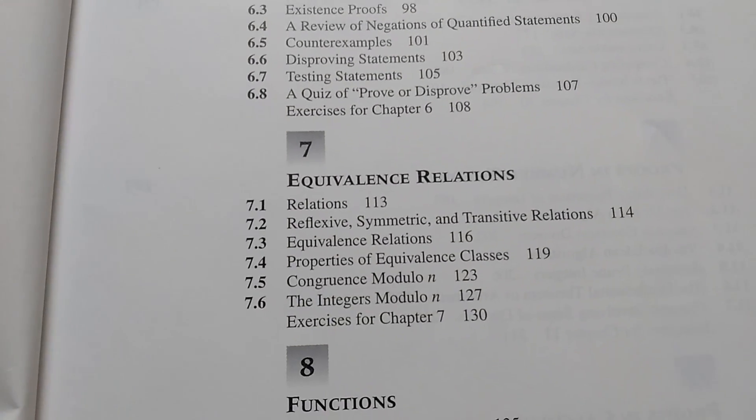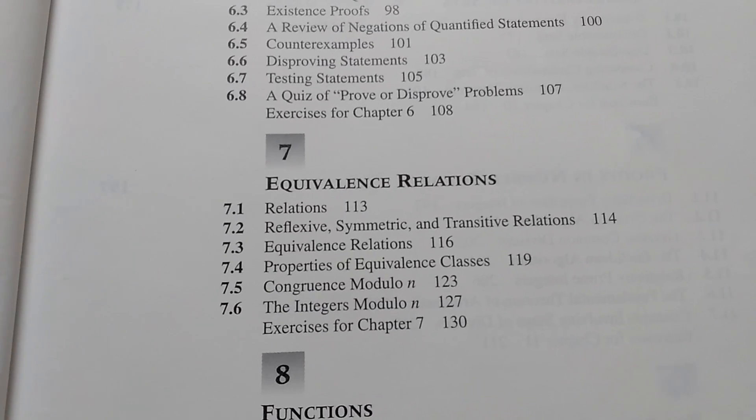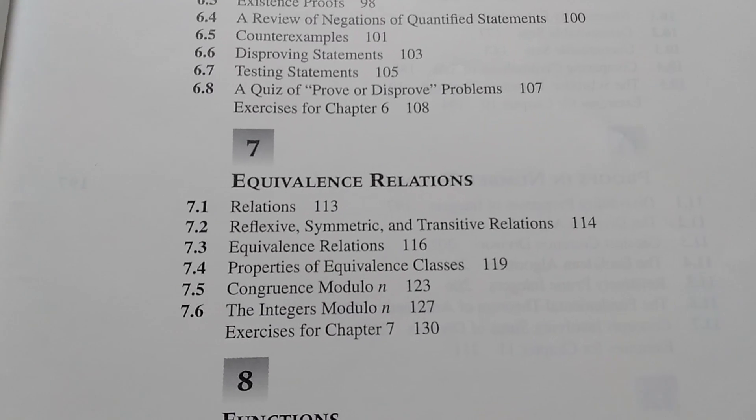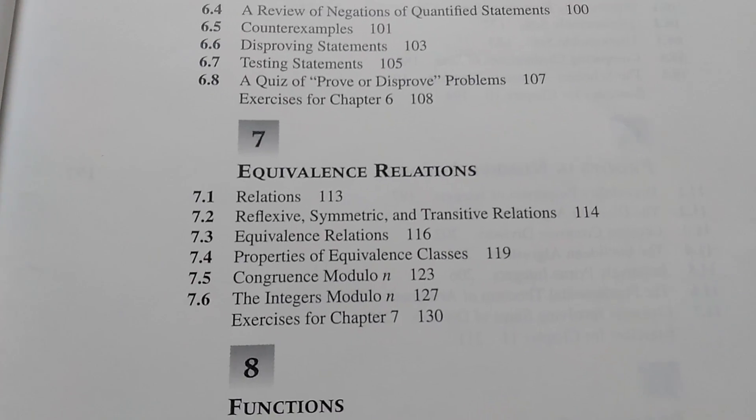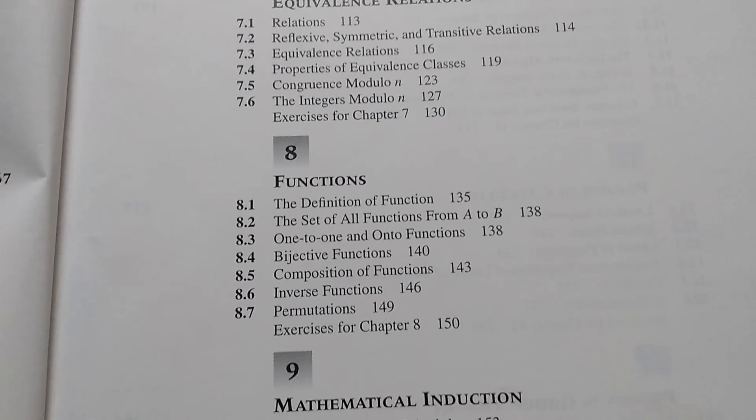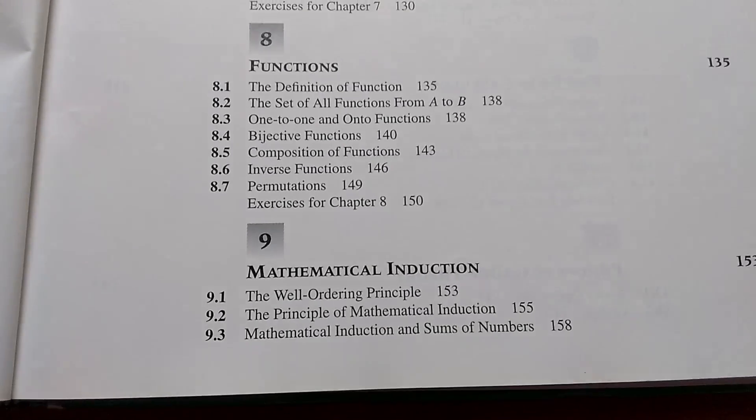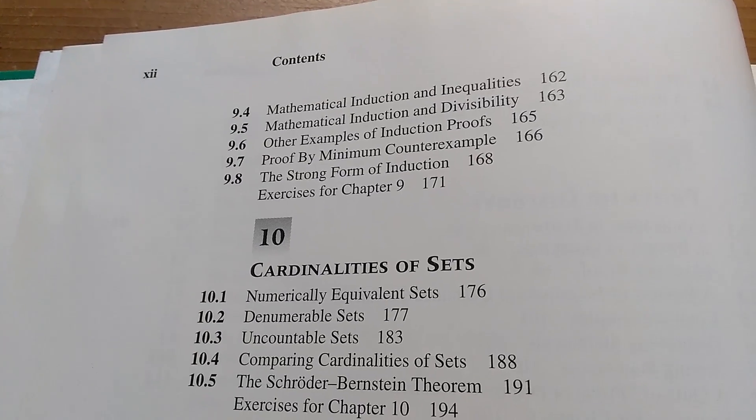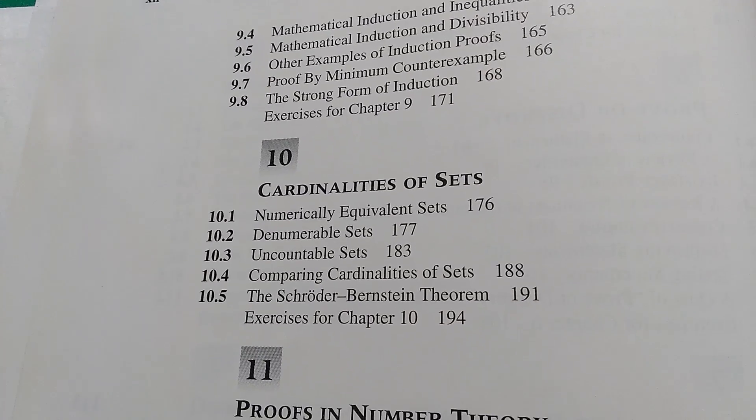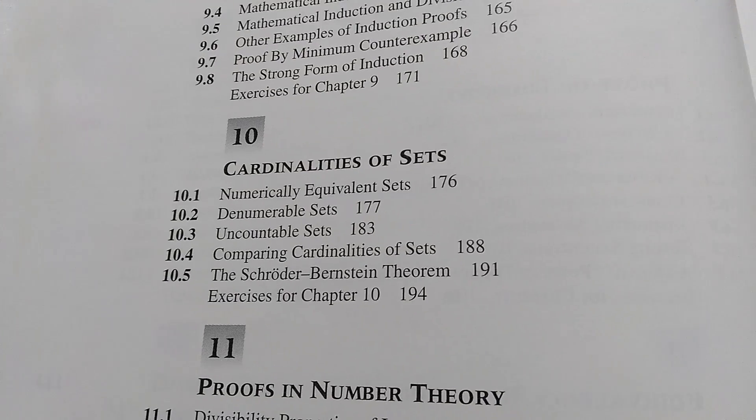Seven is a very nice chapter, and I'm very happy that the authors decided to include this: equivalence relations. These are extremely important and fundamental in all of mathematics. Eight talks about functions, and then nine talks about mathematical induction. There's plenty of induction examples, and then they go on to talk about the cardinalities of sets. This is a nice section.